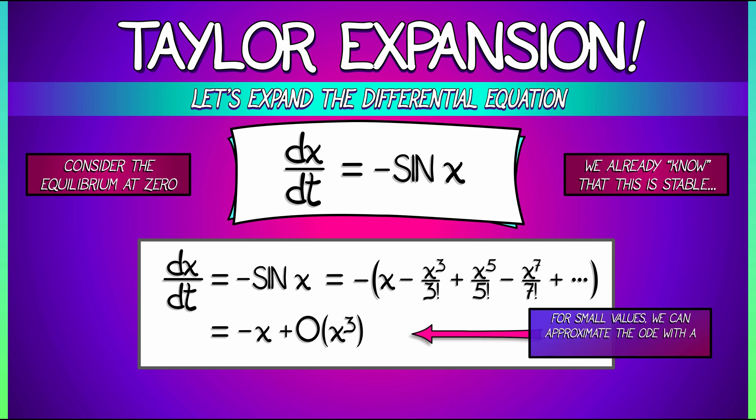And for such small values, let's approximate this ODE with a linear equation. dx/dt is approximately negative x. All the higher order terms are really, really small.